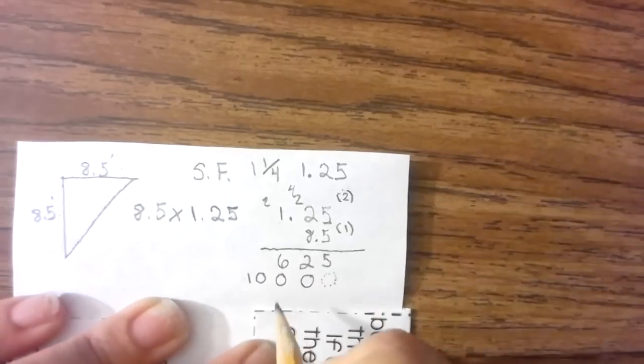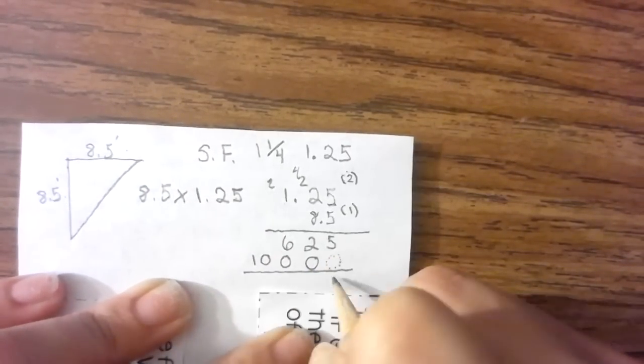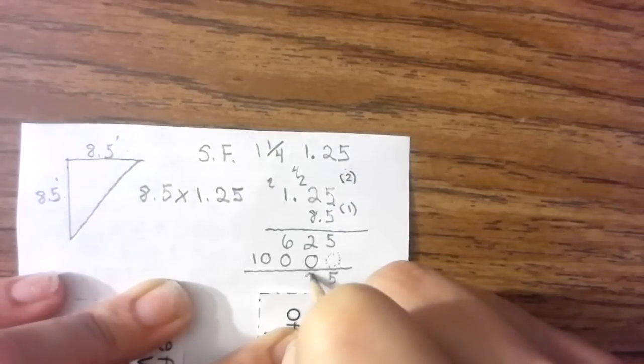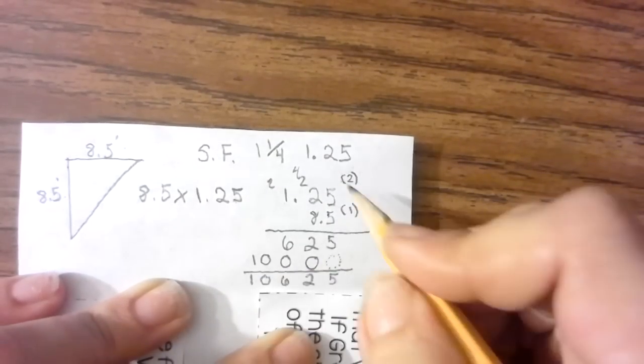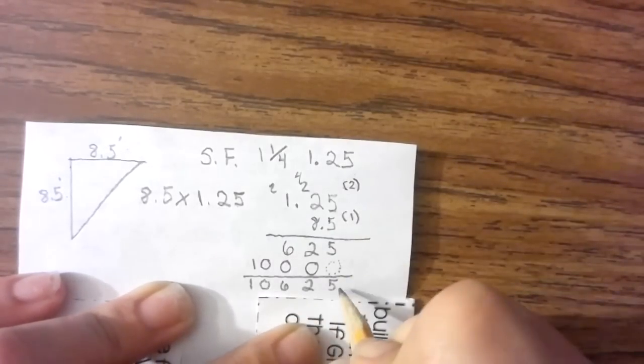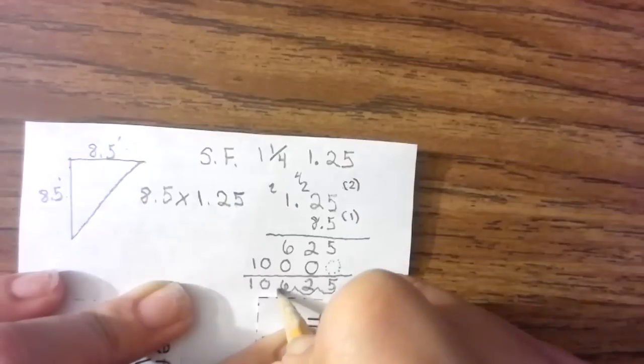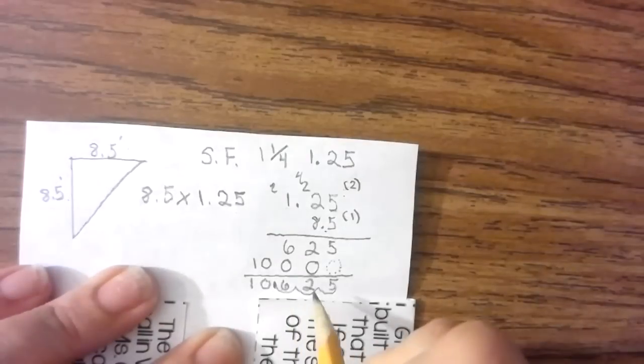Now I'm going to add it together: 5, 2, 6, 0, 1. I need to move my decimal places three spots over, so 1, 2, 3.